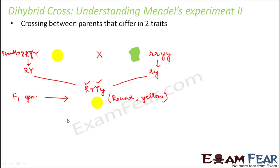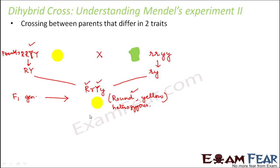This F1 generation again needs to produce their gametes for the F2 generation. For F2 generation, capital R small r capital Y small y — this was heterozygous. So even though the phenotype was round and yellow, the genotype was different. Here this F1 was heterozygous, but the original parent had a homozygous genotype. So that was the difference.